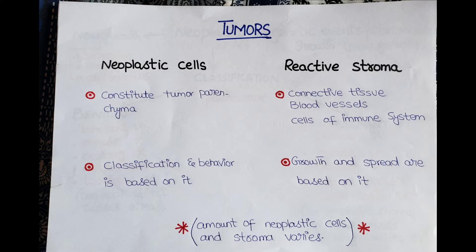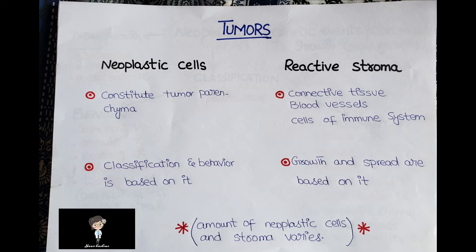All tumors have two basic components: neoplastic cells and reactive stroma. The neoplastic cells constitute the tumor parenchyma, while the reactive stroma is made up of connective tissue, blood vessels, and cells of the immune system — which can be of innate or adaptive immune system.